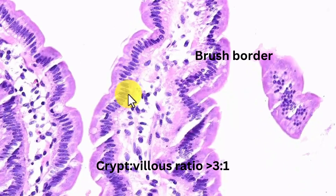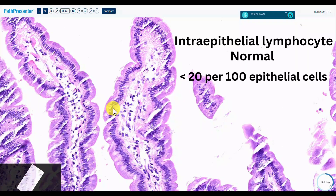You will see scattered lymphocytes — here's one, a dark cell, and here's another. Normally you should be seeing less than 20 lymphocytes per 100 epithelial cells, which translates into one lymphocyte per five epithelial cells. When it crosses 25, that is abnormal, and that gets into the spectrum of celiac disease, though there are many other conditions that cause an increase in intraepithelial lymphocytes.